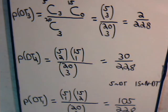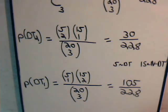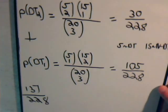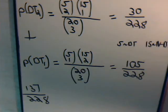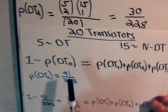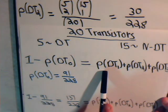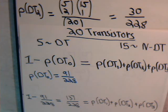So we have the probability that one of the three transistors is defective, that two are defective, and that all three are defective: 105 + 30 is 135, plus 2 — add these together and you have 137/228, just as we figured out in the previous video. In that video we noted that 91/228 was the probability of choosing no defective transistors, and one minus that equals 137/228, which is the sum of all three cases.